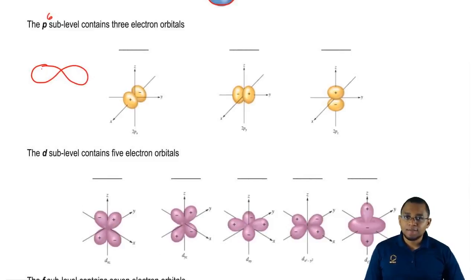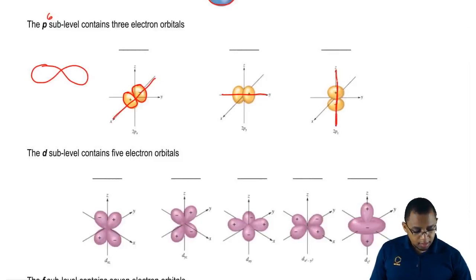These dumbbells reside on different axes, so here this would be Px because it resides on the x-axis. This would be Py because it resides on the y, and then these would be Pz because they reside on the z-axis.